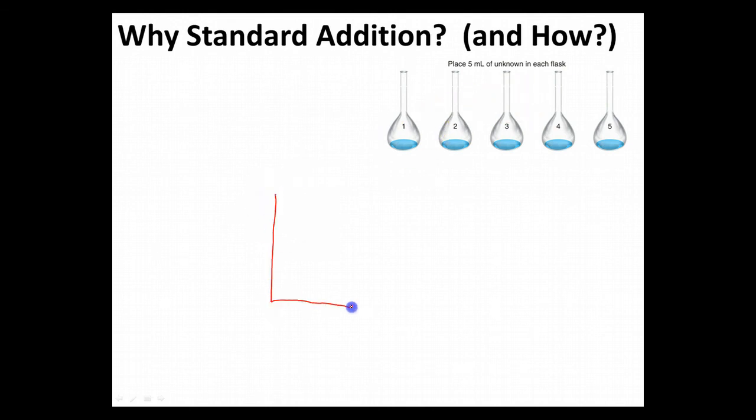So if I'm keeping track, I'd go ahead and make a graph. I've got a point and I have added 0 milliliters of spike so far.